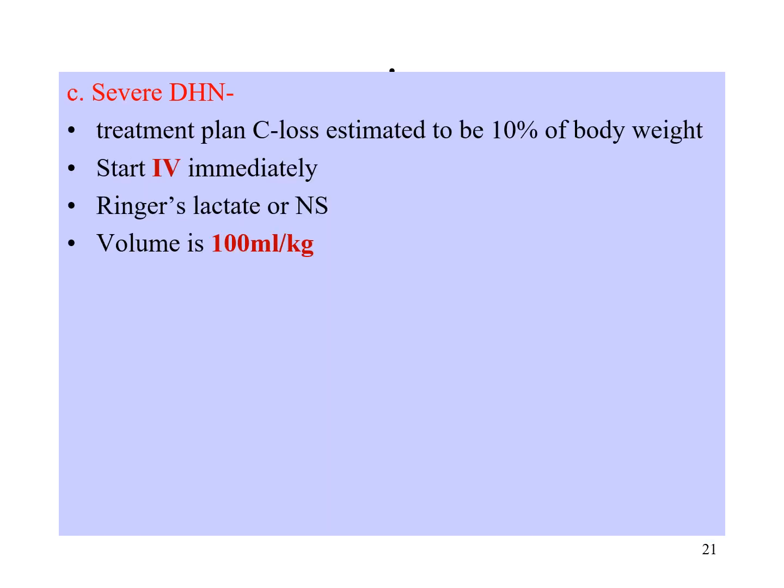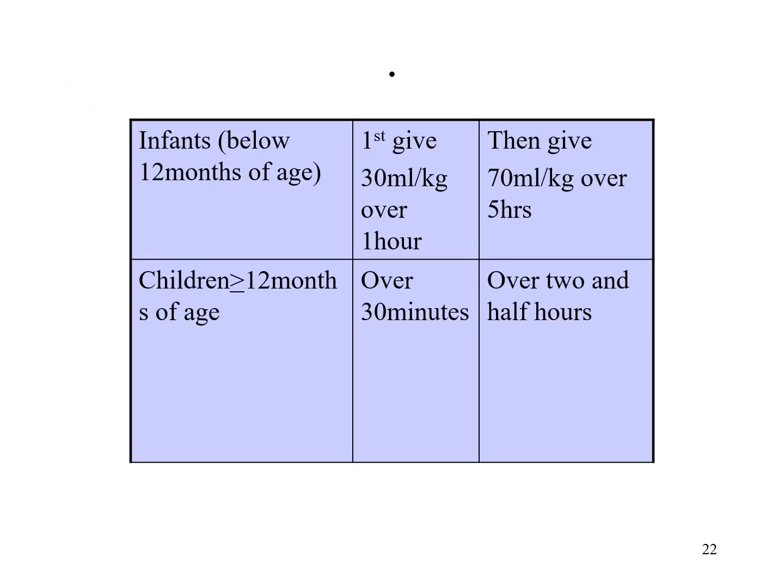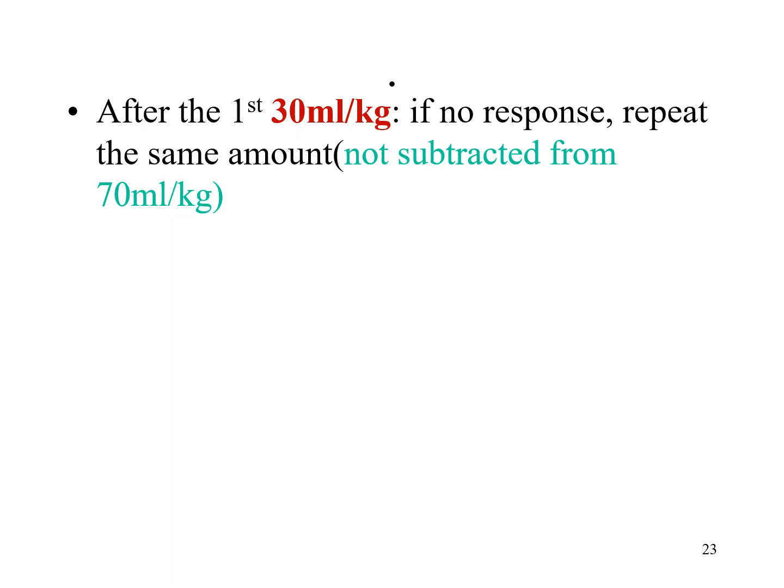For severe dehydration, management follows Plan C. Start IV fluids immediately using Ringer's lactate or normal saline, with a total volume of 100 ml per kg. For children less than 12 months, give 30 ml per kg over 1 hour, then 70 ml per kg over 5 hours. For children more than 1 year, give 30 ml per kg over 30 minutes, then 70 ml per kg over 2.5 hours. After the first 30 ml per kg, if there is no response, repeat the same amount.